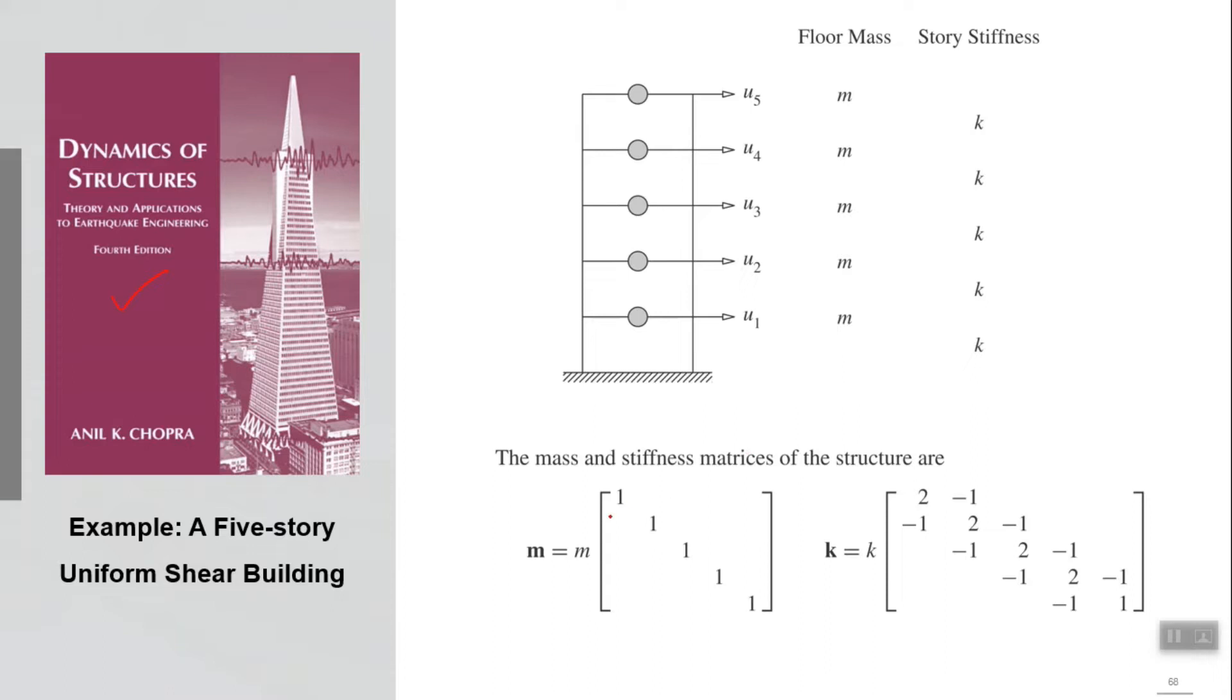So, the mass matrix and K matrix can be formulated directly because it is a shear building. M and K are known, off-diagonal terms are zero. We can perform eigenvalue analysis and calculate five phi vectors and five omega values, correspondingly five time periods.